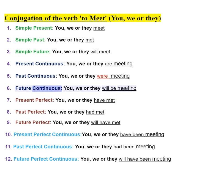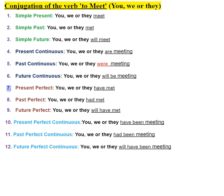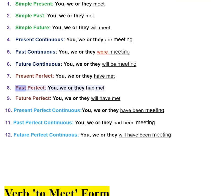6. Future continuous — you, we, or they will be meeting. 7. Present perfect — you, we, or they have met. 8. Past perfect — you, we, or they had met.